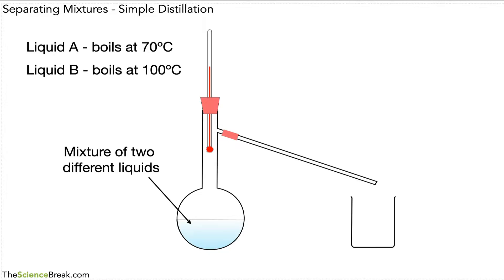The first step would be to heat to 70 degrees centigrade. Why? Because Liquid A boils at 70 degrees centigrade. So if we heat to 70 degrees, Liquid A will boil. You can see it there evaporating off from the surface in the flask.